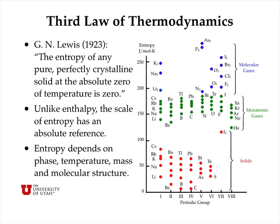Listed in a chart by periodic group are solid elements at the bottom, monatomic gases in the middle, and molecular gases above that. Within each group, the entropy of a substance increases with mass — lithium has a relatively low entropy whereas cesium has a relatively high entropy. Monatomic gases have higher entropies in general than solids, and molecular gases have higher entropies than monatomic gases. All of these lie somewhere between zero and about 300 joules per mole per kelvin. For very complex polyatomic molecules, entropies will be even higher, but for ordinary diatomic molecules, solids, and gases, entropies generally fall below 300 joules per mole per kelvin.